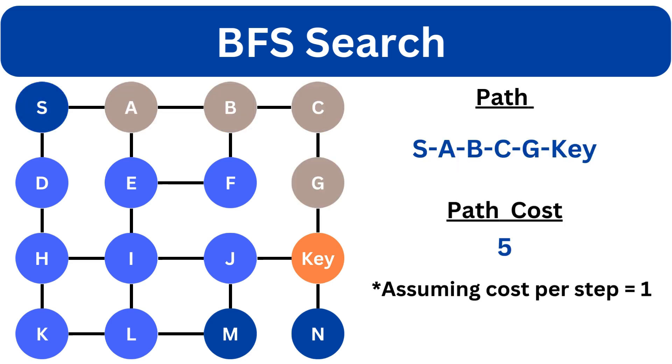Now we will find the path by backtracking. So the path comes out to be S, A, B, C, G and key. And the path cost is 5. We are assuming that the cost per step is equal to 1.